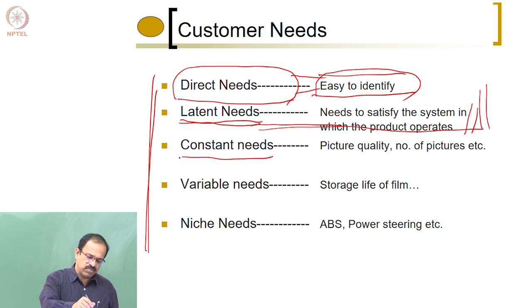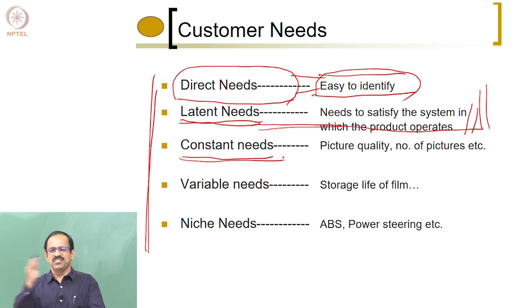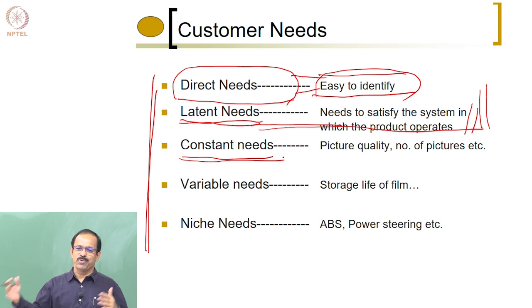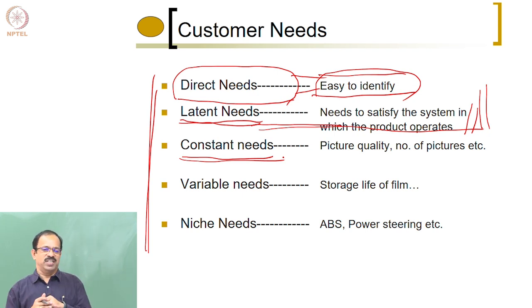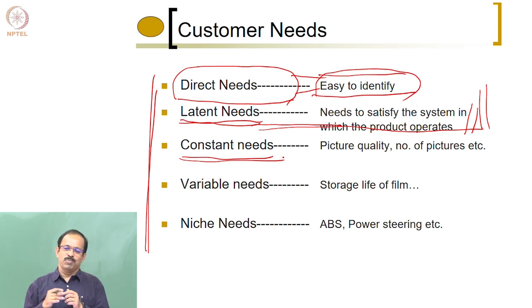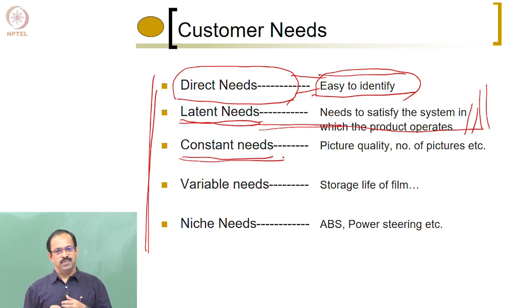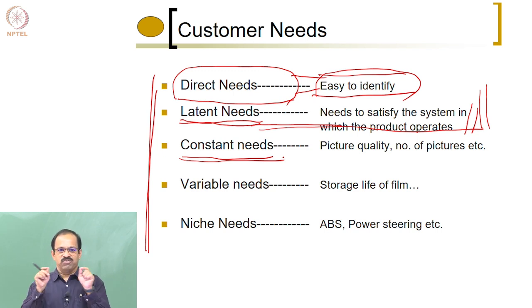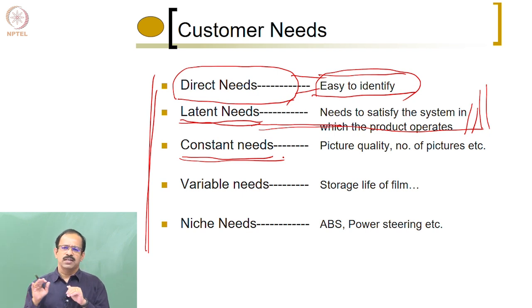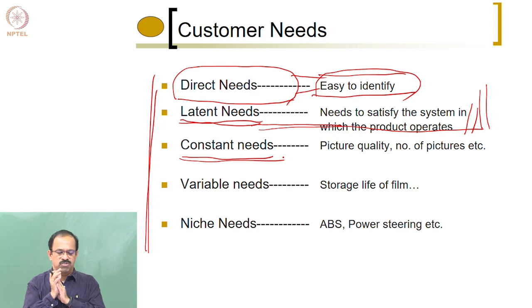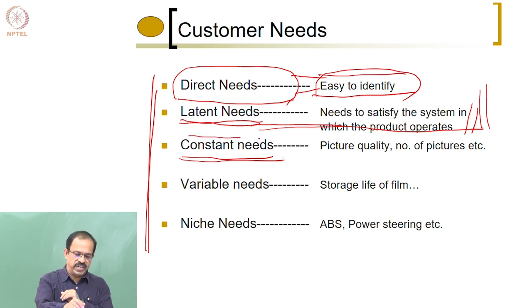Other needs are known as constant needs — something which will always be there. Anytime you take any product, there will be something constant. For example, if you talk about a mobile phone, 10 years ago people said 'good picture quality,' and now people still say 'good picture quality,' though the definition of 'good' has changed continuously. People will always be looking for that particular thing in a particular product. Such needs are known as constant needs.